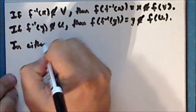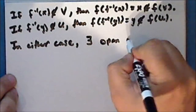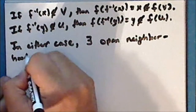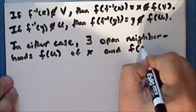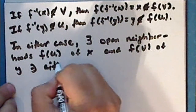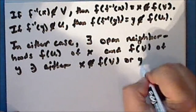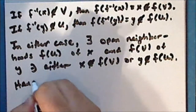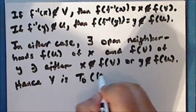In either case, there exist open neighborhoods f(u) of the point x and f(v) of the point y such that either the point x is not in the direct image of v, or the point y is not in the direct image of u, and hence the space Y is T0, or Kolmogorov.